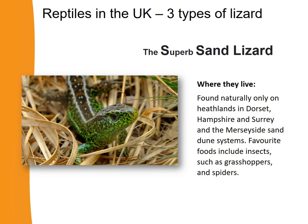Now let's look at our lizards, starting with the sand lizard. Where do sand lizards live? They're found naturally only on heathlands in Dorset, Hampshire and Surrey, and on the Merseyside sand dune system, so they only live in a few places in the UK. What do their habitats give them in terms of food? They like insects such as grasshoppers and spiders.